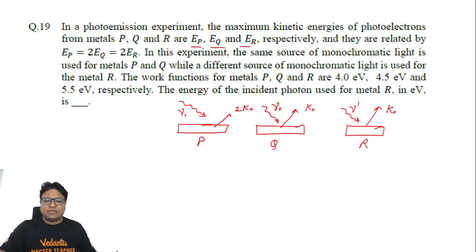The work function of P, Q, and R. So work function of P is 4 electron volt, of Q is 4.5 electron volt, and of R is 5.5 electron volt.